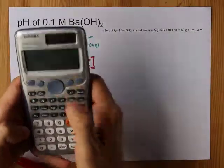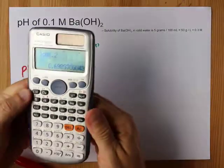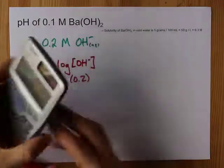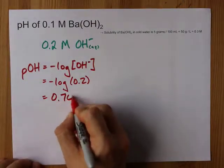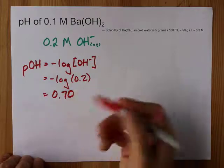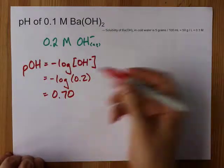That is the negative log of 0.2. I get 0.698, I'm going to round that to 0.70, and then you just have to convert pOH to pH.